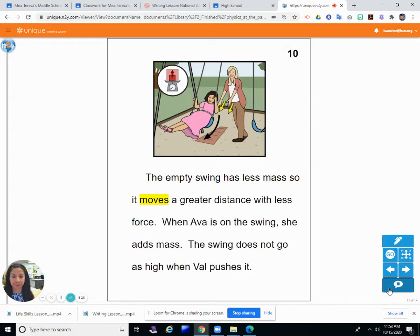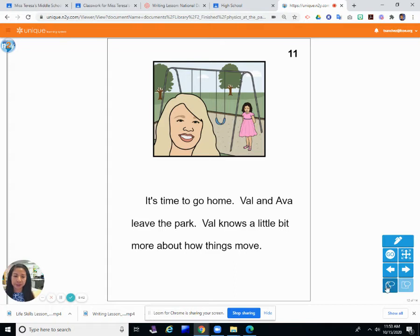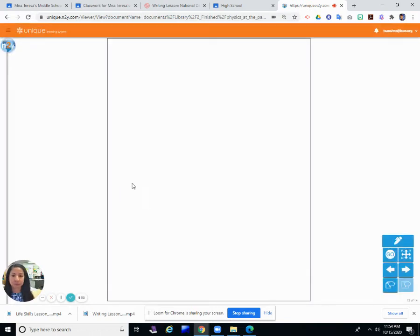The empty swing has less mass so it moves a greater distance with less force. When Ava is on the swing, she adds mass. The swing does not go as high when Val pushes it. So it's a little harder to push the swing higher when Ava's on it because she makes it a little heavier. It's time to go home. Val and Ava leave the park. Val knows a little bit more about how things move. And hopefully we know a little bit more about how things move. The end.